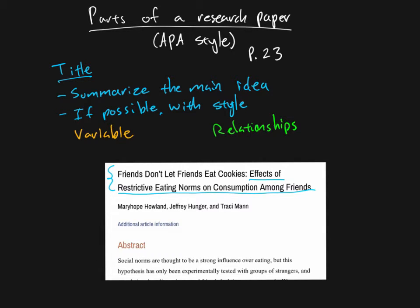And you can see that here, we have, let's see, restrictive eating norms is one of their variables, right? That's one variable. And another one is consumption among friends. And we don't know the details of exactly what these variables are, but these are definitely the two main variables that they were looking at in the study.